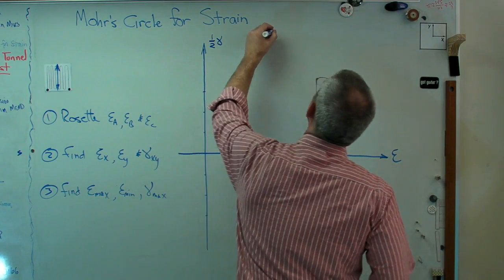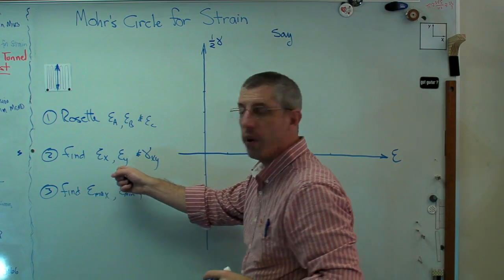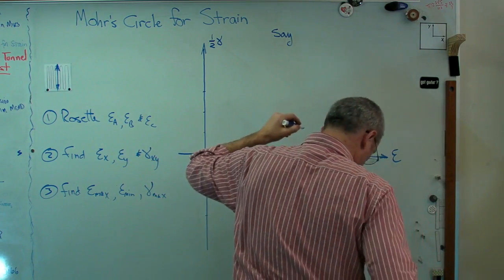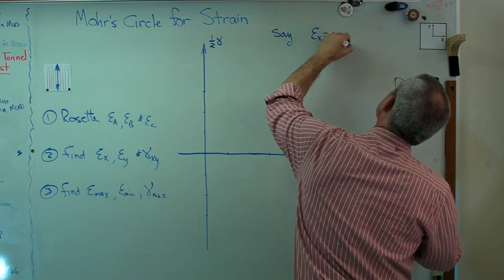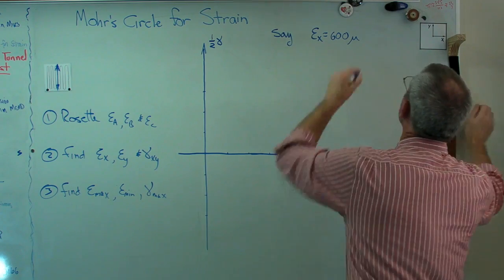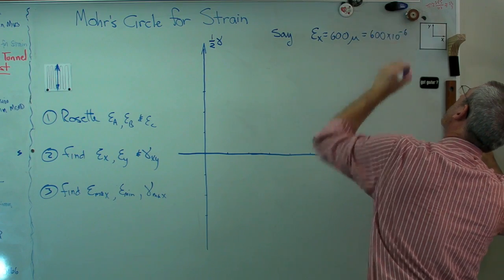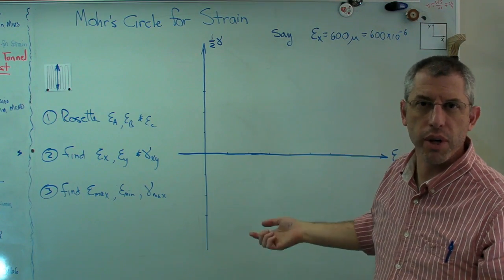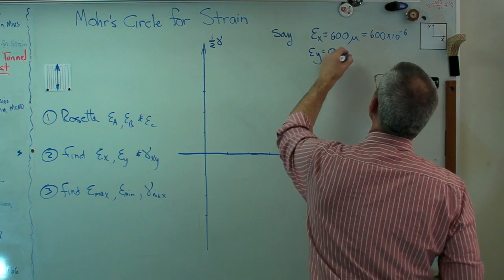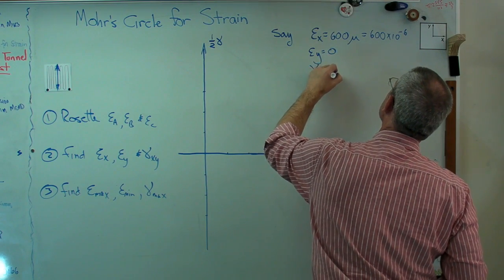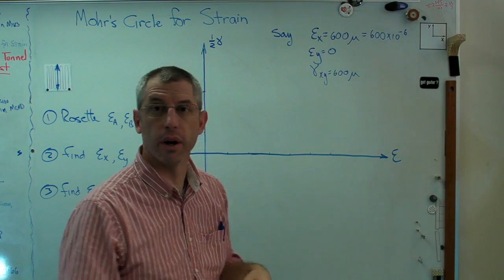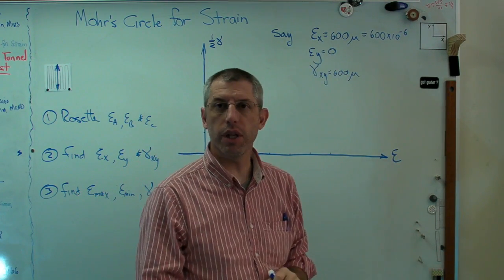So let's say we already know what epsilon x and epsilon y and gamma xy are from this step here. And let's say epsilon x equals 600 mu, that's for micro strain. That means it's 600 times 10 to the minus 6. Mu means micro means 10 to the minus 6. And let's say this is zero for epsilon y. And let's say gamma xy also turned out to be 600 micro strain. Now these can be anything, but it doesn't matter what those three are. You can still plot them on here and it'll still work. I just selected these numbers because they were convenient.